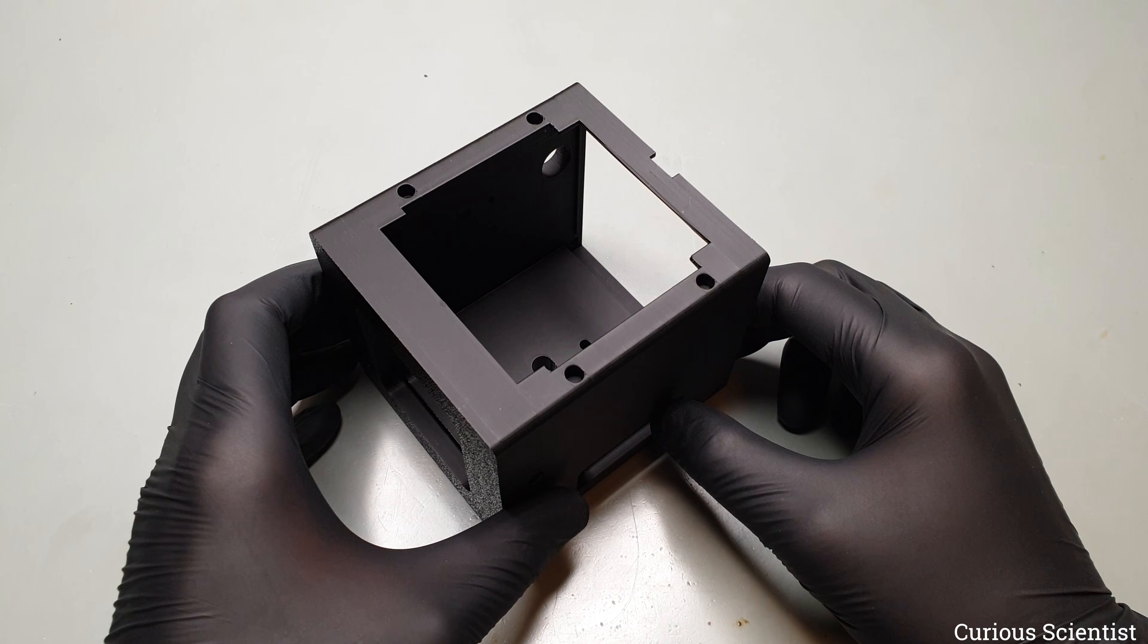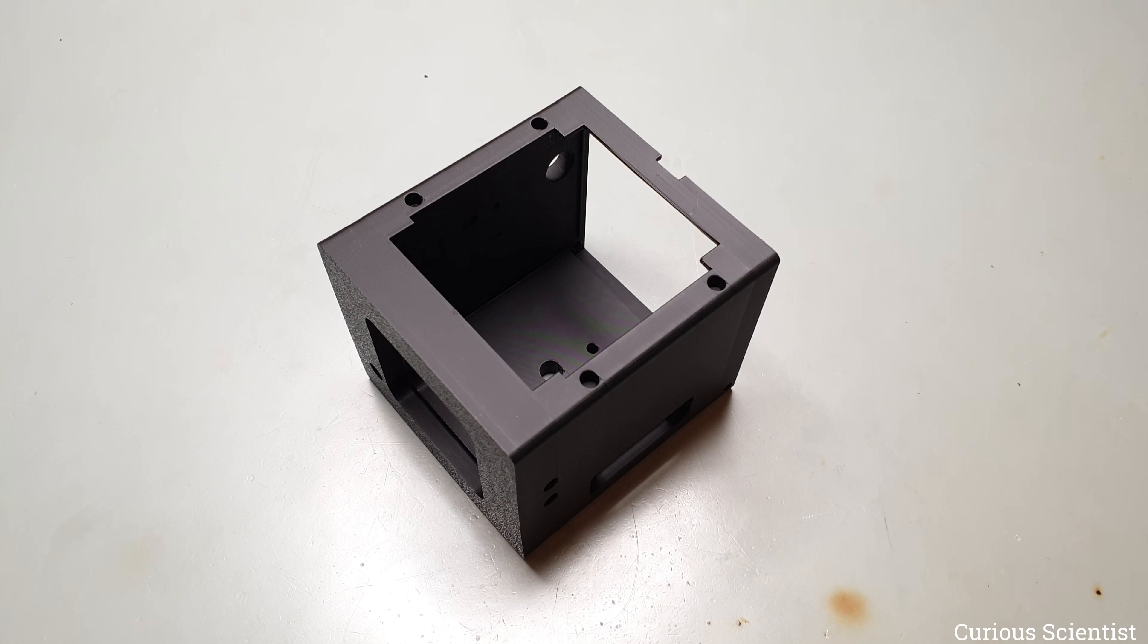We can start with the main camera body, since everything is mounted on it or placed inside it. It is a one piece print. It took about 3 and half hours on my Bambulab X1C printer and used roughly 110g of filament. I used supports, so they also contributed to the filament usage.